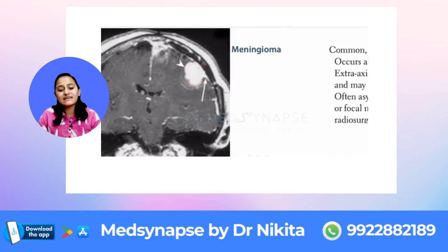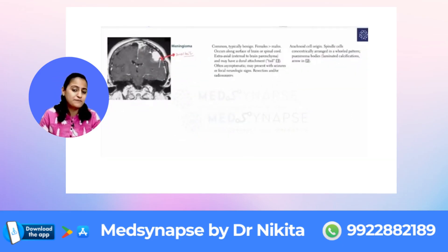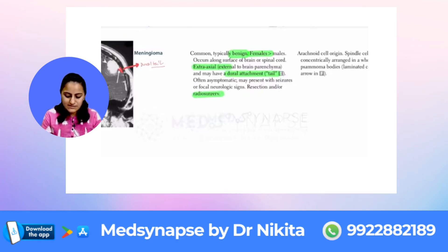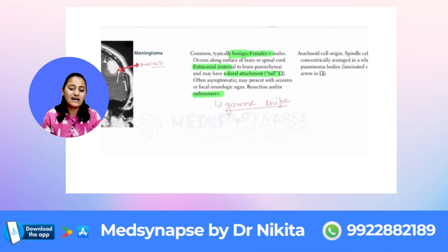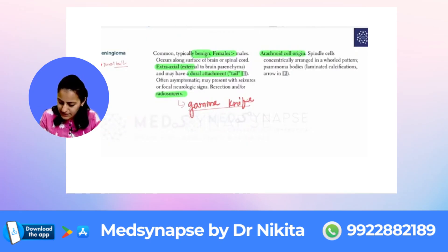This image shows an extra-axial, vividly enhancing tumor with the dural tail sign. As a quick summary: meningioma is a common, typically benign tumor; females are affected more; it is extra-axial, not intra-axial; it shows a dural tail sign on imaging. Treatment is resection or radiosurgery — specifically gamma knife. It originates from arachnoid cells, and histology shows spindle cells concentrically arranged in a whorl pattern, along with psammoma bodies, which are laminated calcifications.